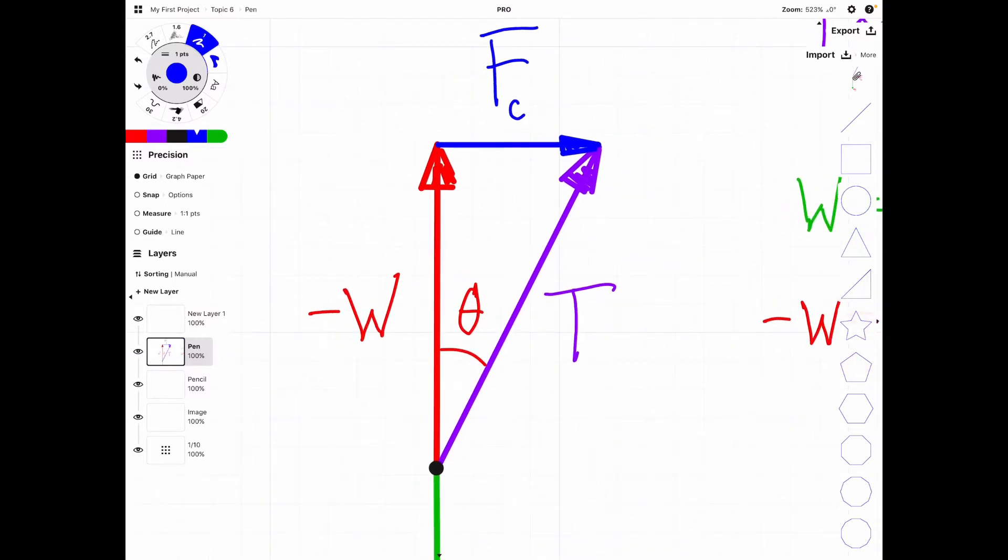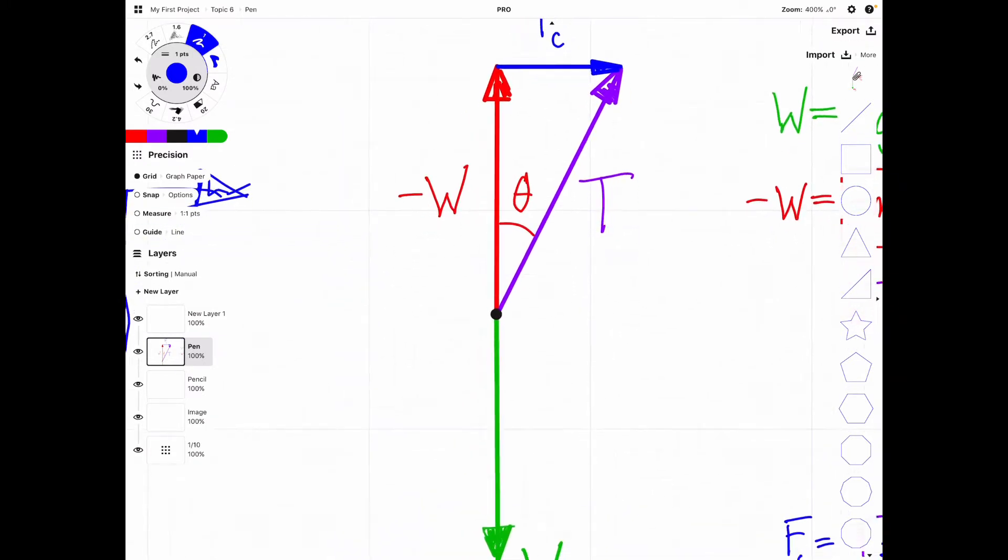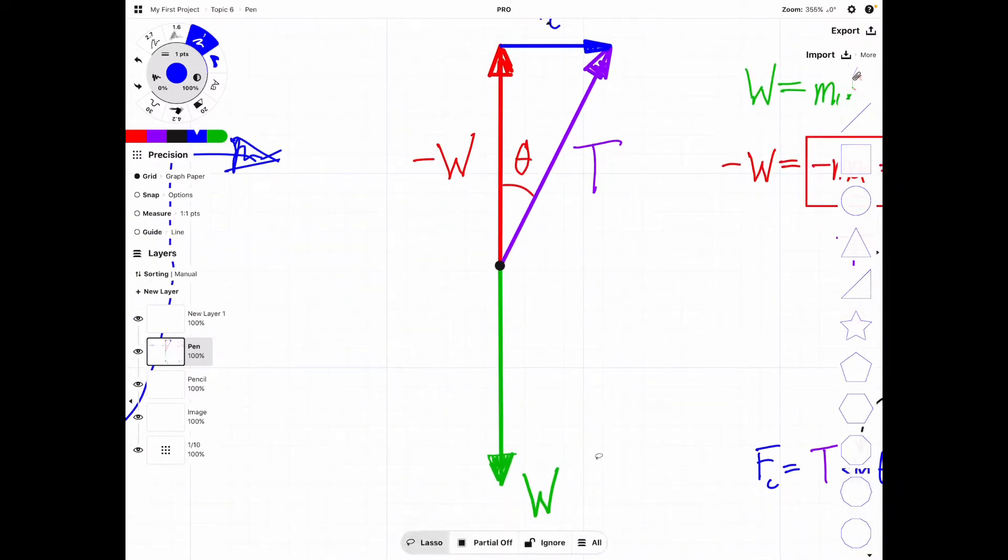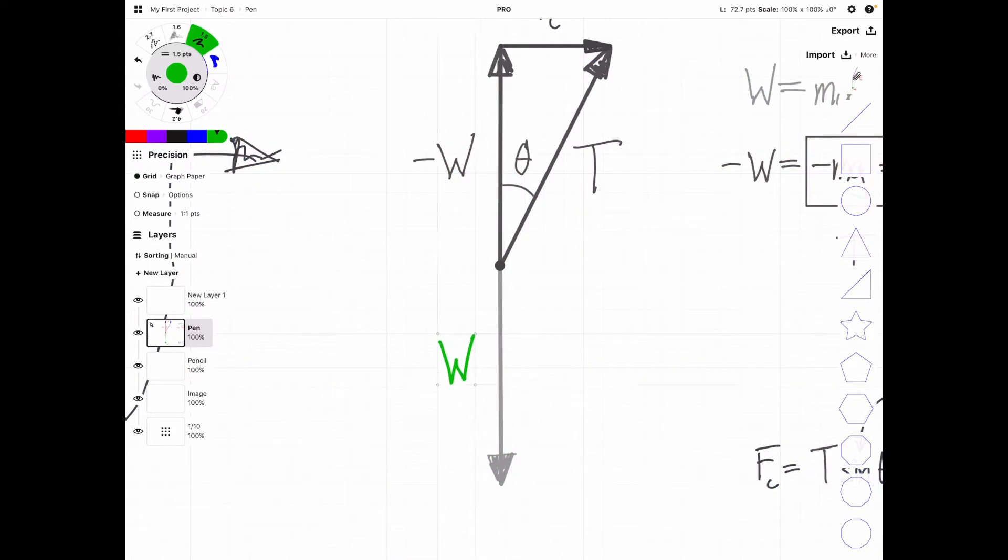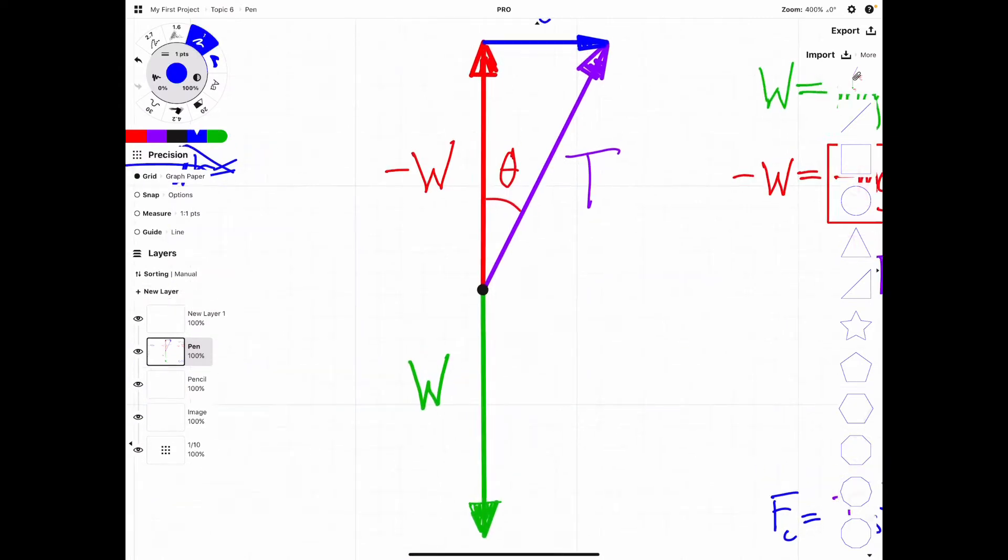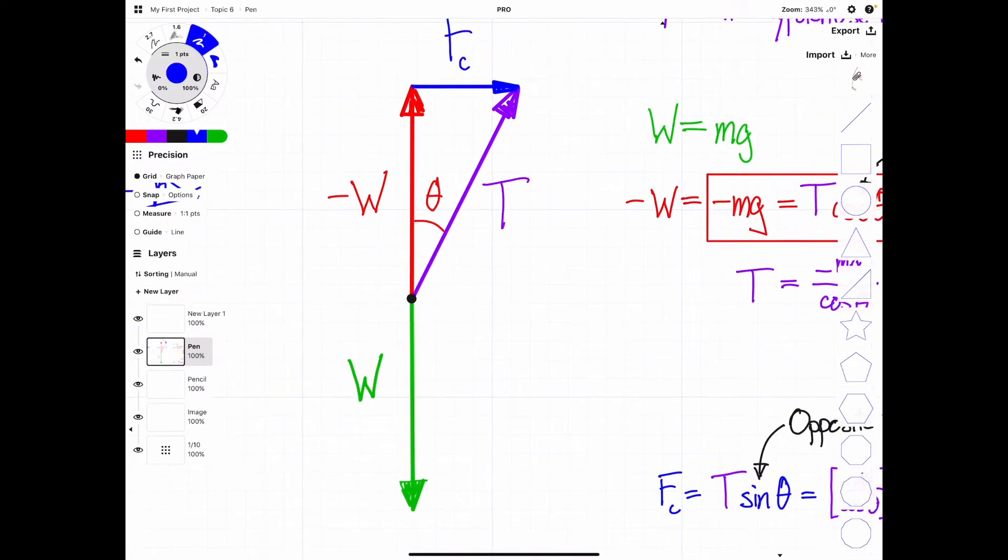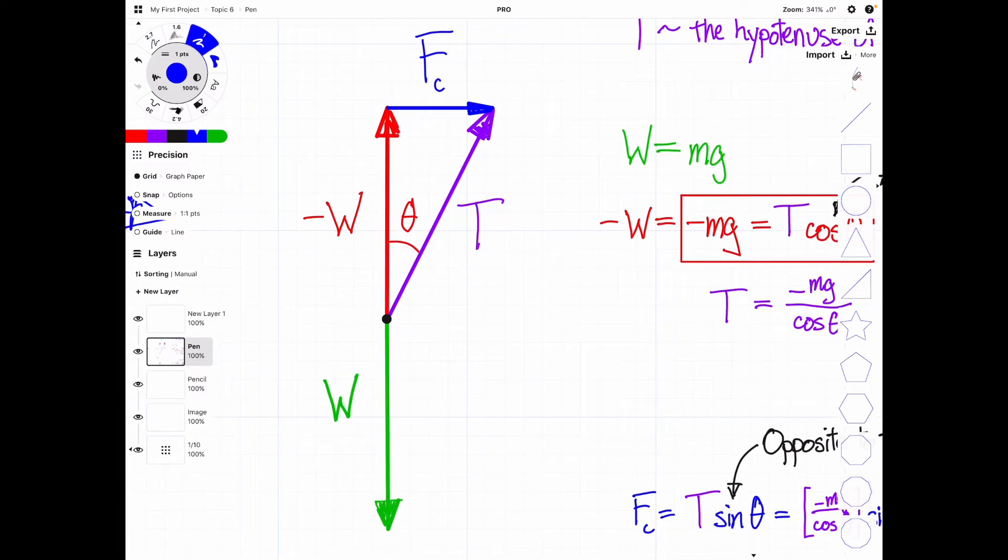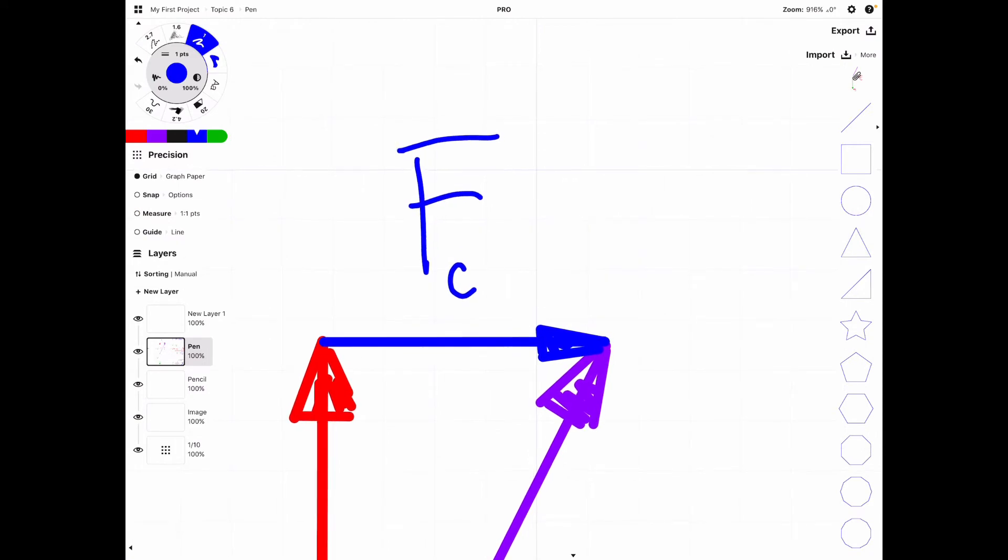The vertical component of tension is just going to be negative weight. So if we take the sum of our vertical components, what we're going to find is that sum is equal to zero. In other words, our vertical components cancel each other out, and all we're left with is our horizontal component.